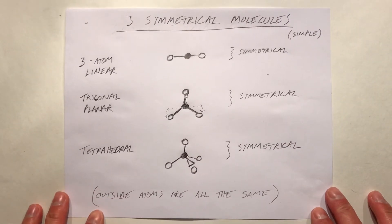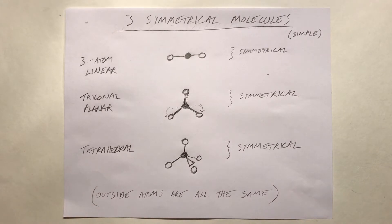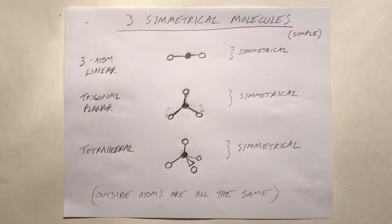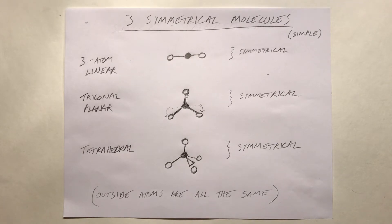We can look at a few basic shapes and understand that complex molecules are built of smaller, simpler shapes. If you have two identical atoms bonded together, that would of course be a symmetrical structure.